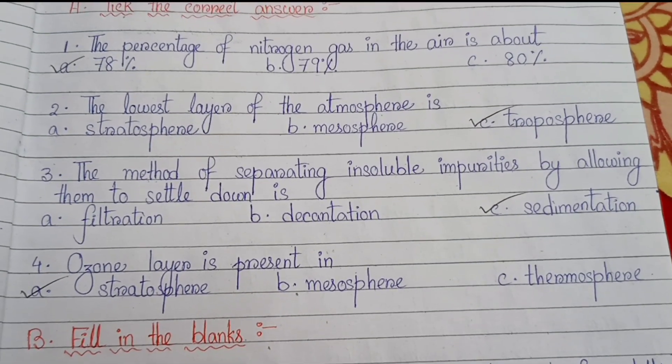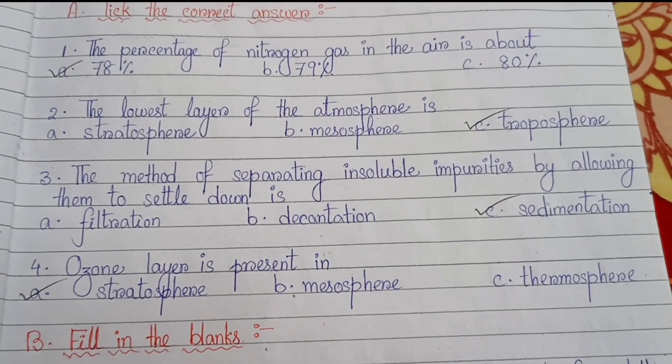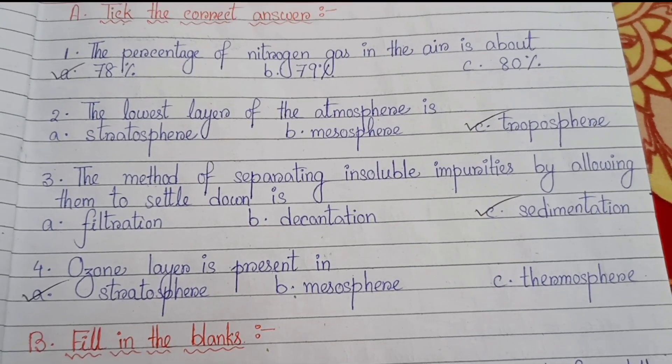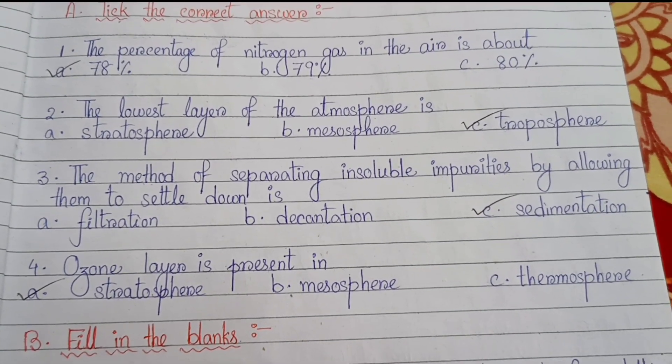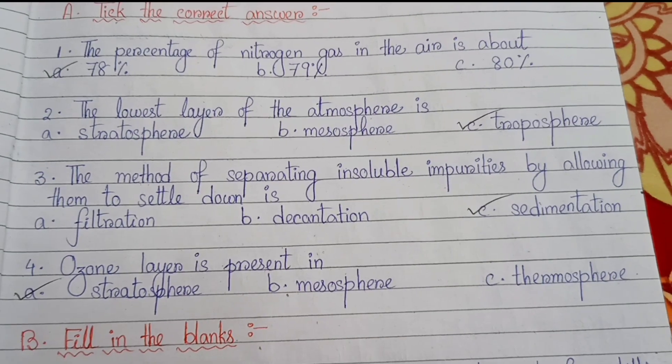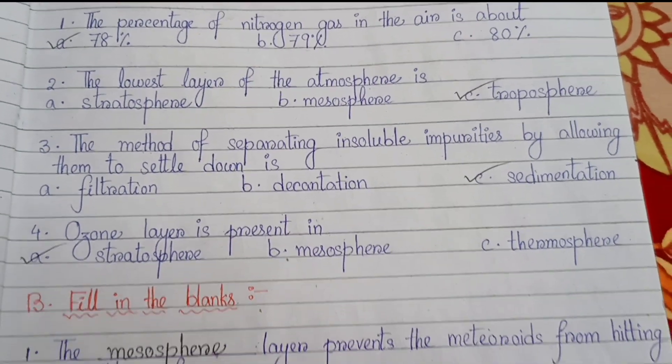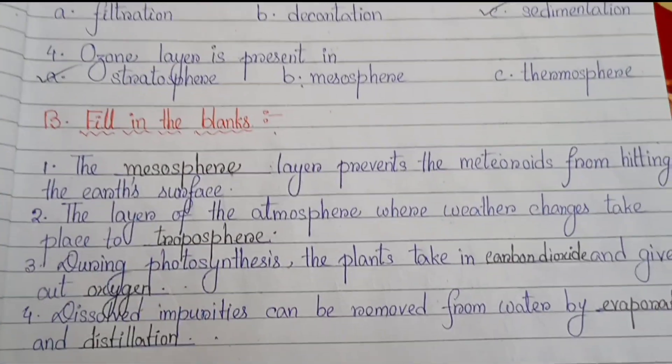Number 4: the ozone layer is present in (a) stratosphere, (b) mesosphere, (c) thermosphere.